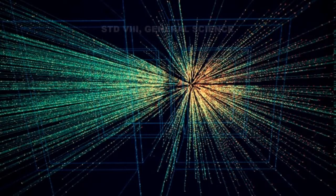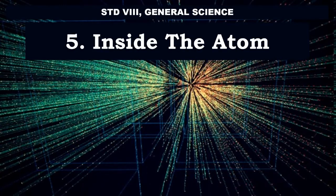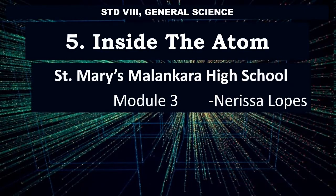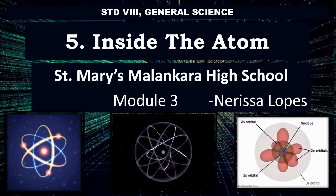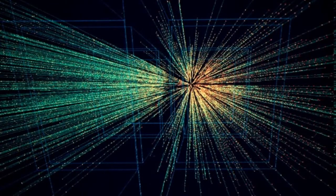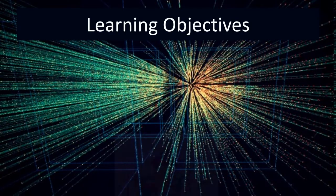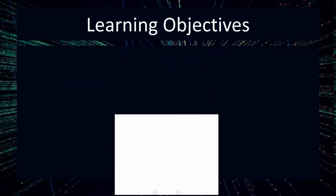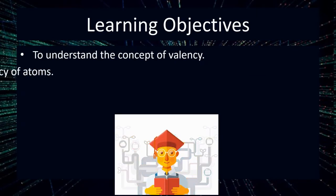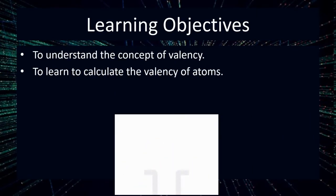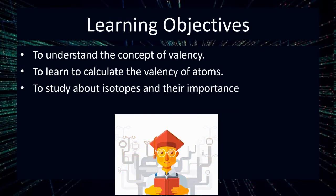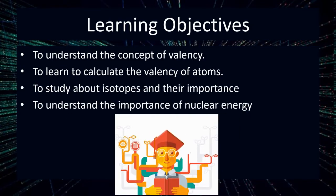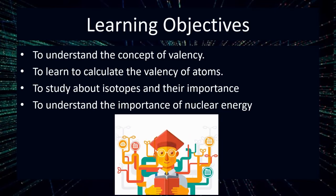Welcome children to Standard 8 General Science Chapter 5, Inside the Atom, Module 3. The learning objectives for this session are to understand the concept of valency, to learn how to calculate the valency of atoms, to study about isotopes and their importance, and to understand the importance of nuclear energy.